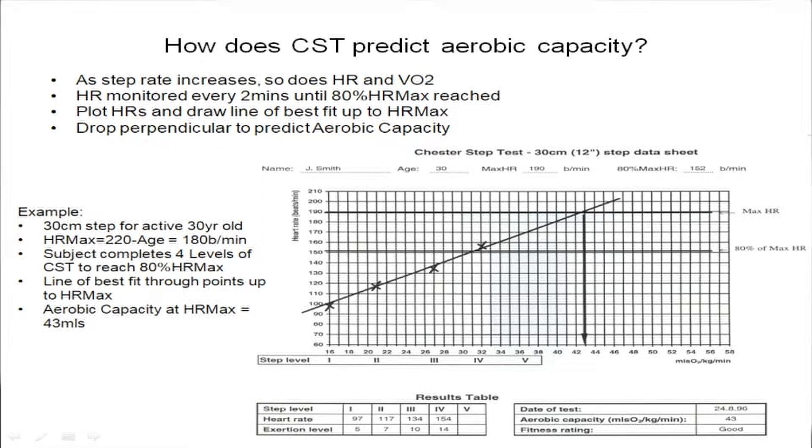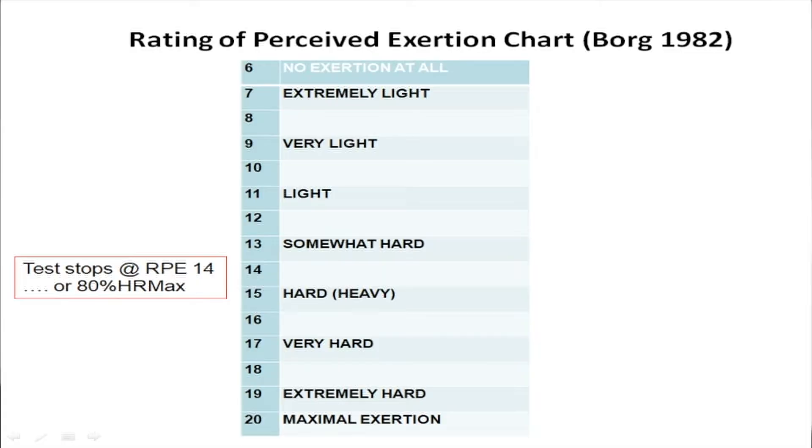Rating of perceived exertion is used to ensure the individual doesn't approach anywhere near 17, 18, 19, or 20 on the scale.